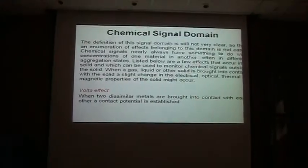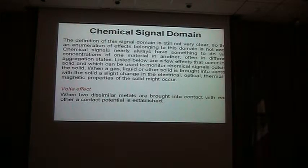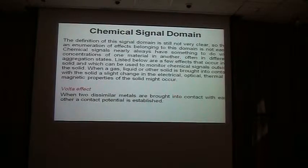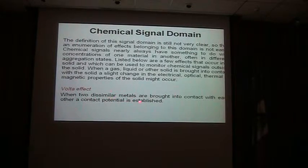Chemical sensors are extremely important. In the chemical sensing domain, we are interested to measure — in both gas and liquid media — the concentration of certain species. Concentration is our major concern: concentration of gas, or concentration of ions, inorganic ions, in a liquid media. We can employ changes in the electrical, optical, thermal, and magnetic properties of the solid. The effects which could be applied include the Volta effect: when two dissimilar metals are brought into contact with each other, a contact potential is established.